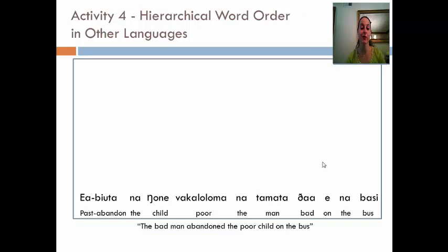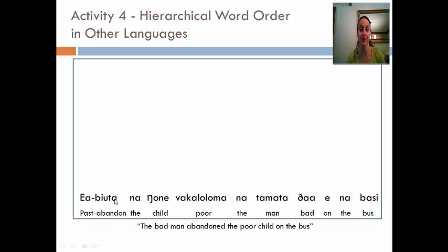Now I'm going to give you the same sentence translated in Fijian. Take a second to look at it and see if you can determine the linear word order — is it SVO, OVS, or VSO? Hopefully you said V, because the verb is first; then O, because the child is the object; and then the man is the subject — S, coming last. So the word order of Fijian is VOS. Now, knowing it's a VOS language, go ahead and diagram this sentence out.